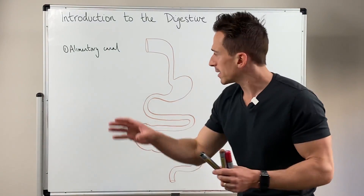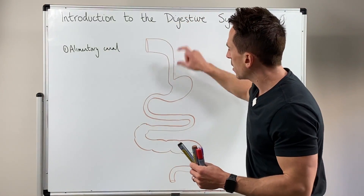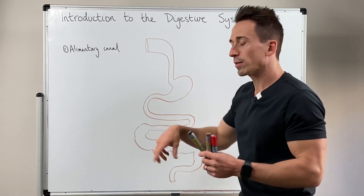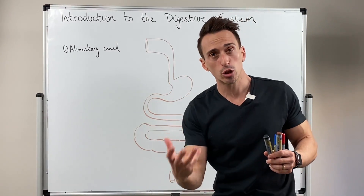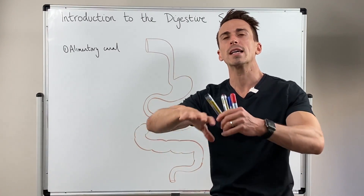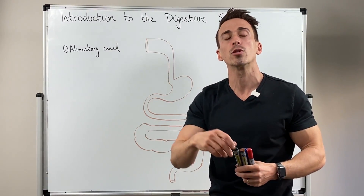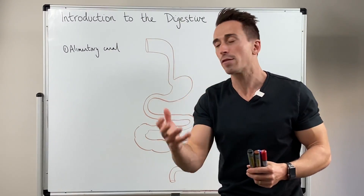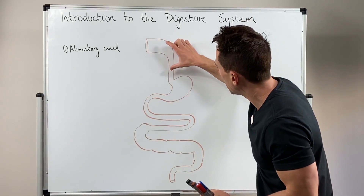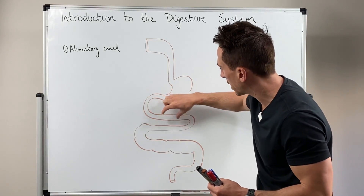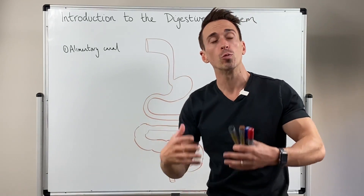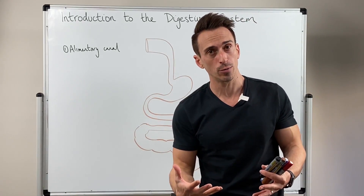Now the thing is, this alimentary canal, while it's a muscular tube, also has other layers to it that allow for it to have many different functions depending on what aspect of the tube we're referring to.